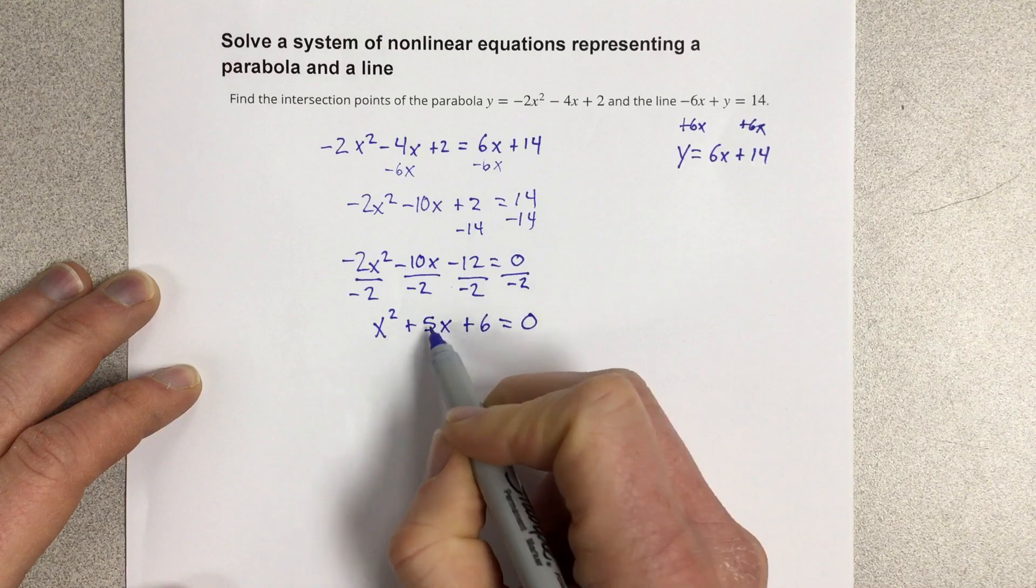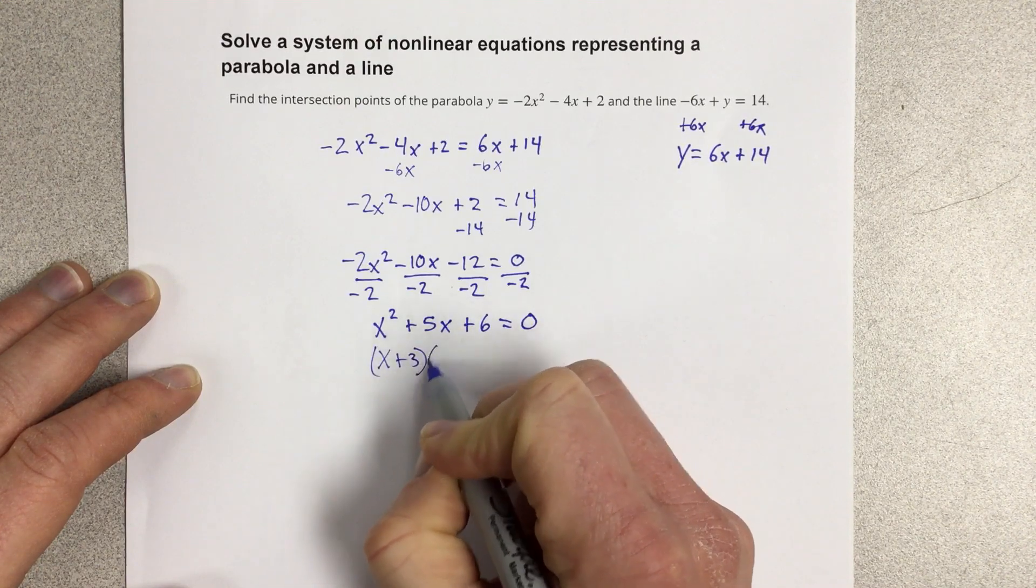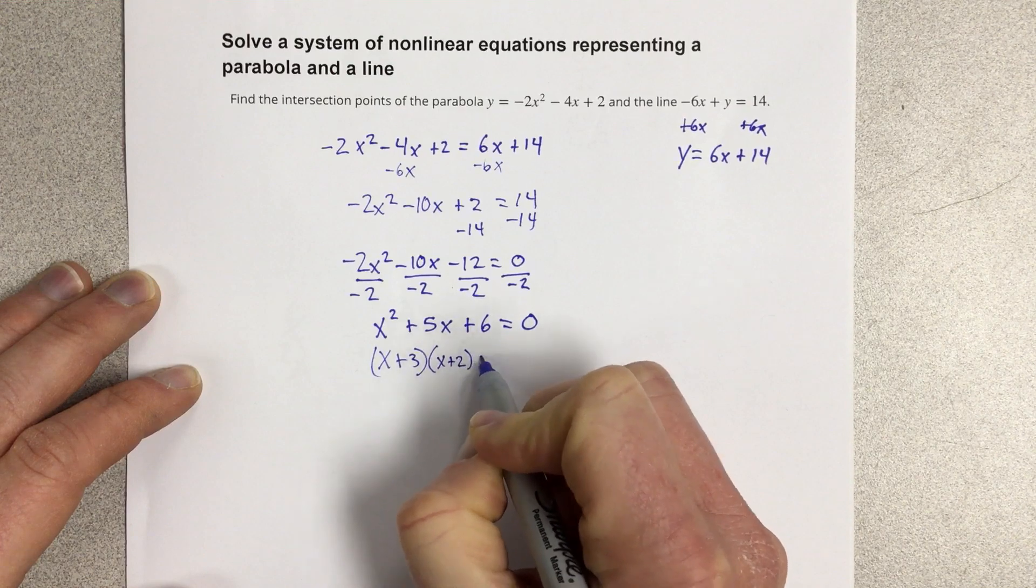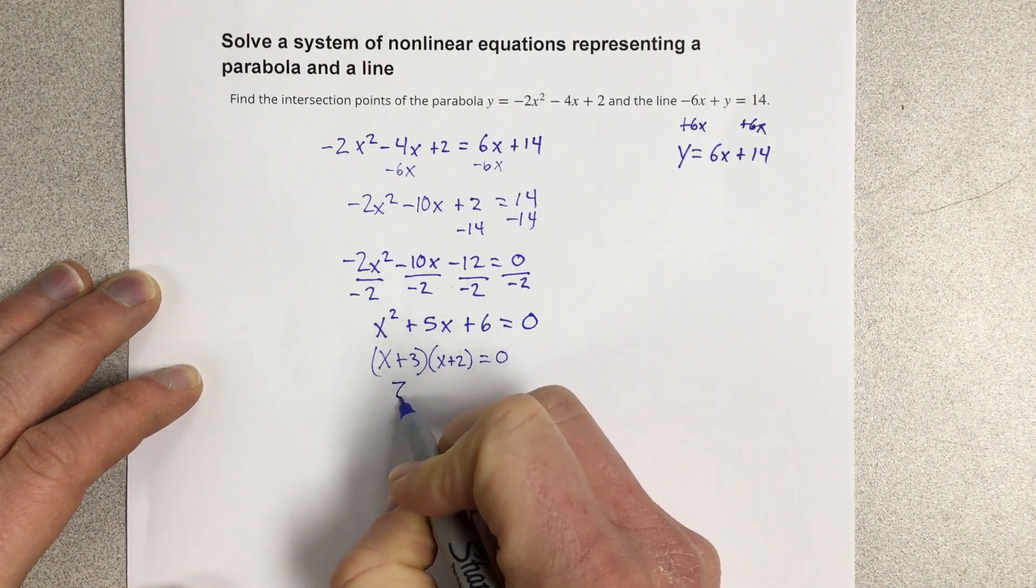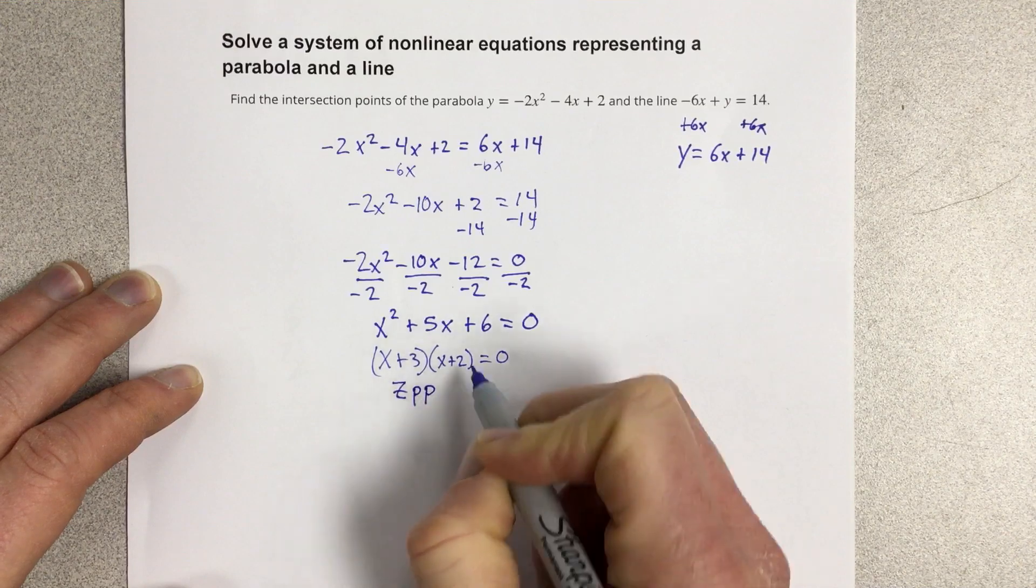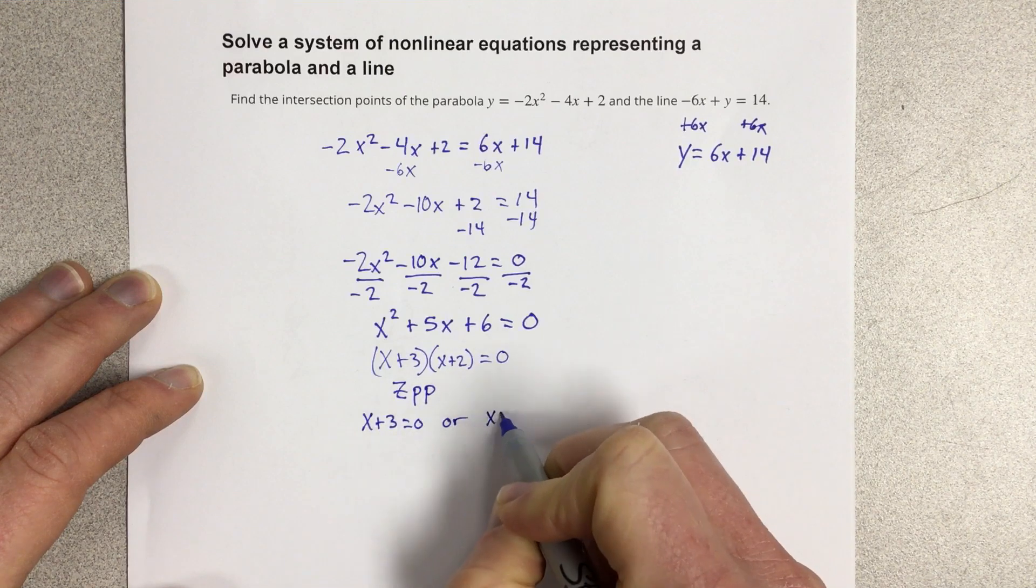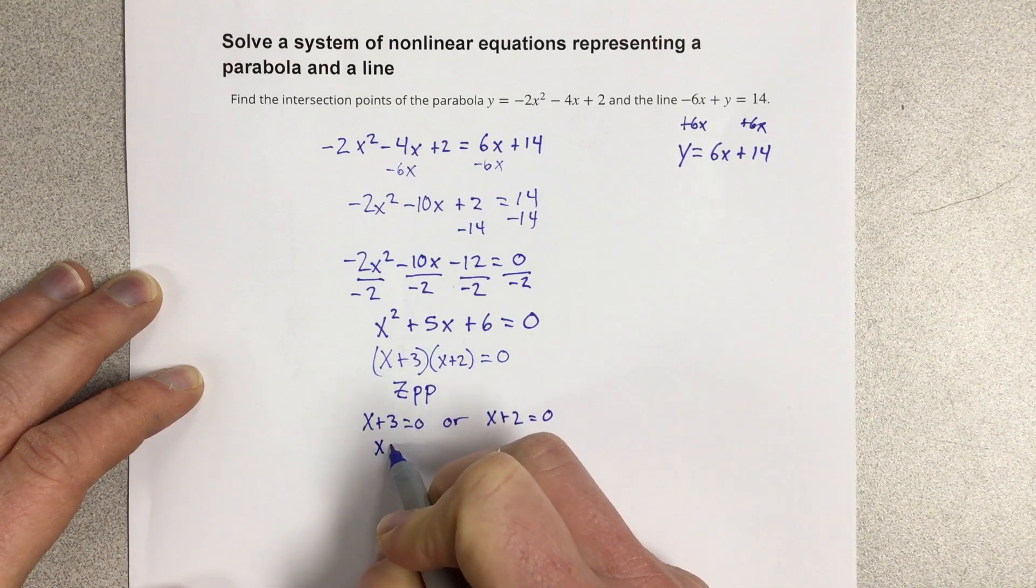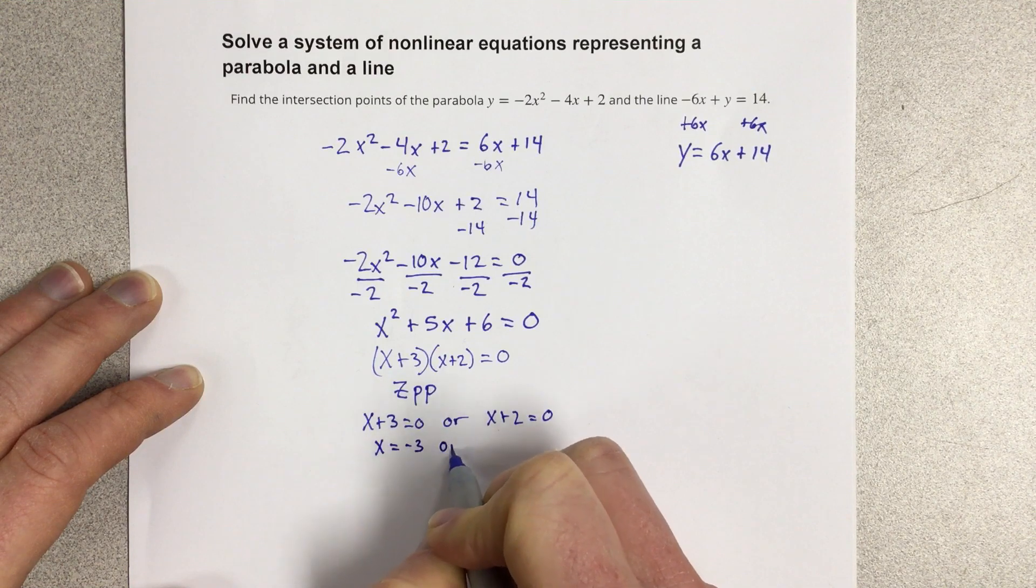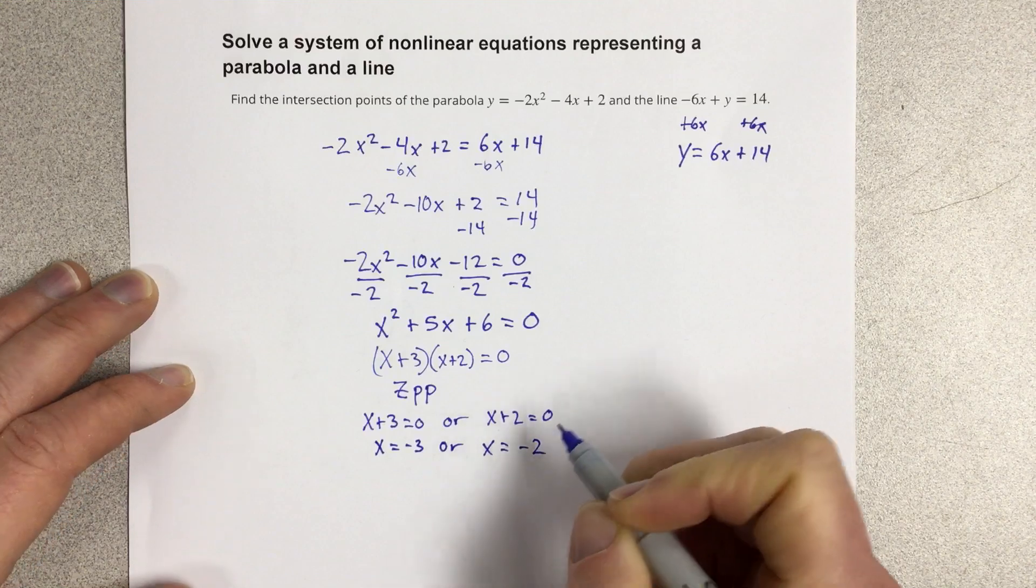So the factors of 6 that add to 5 would be x plus 3, x plus 2 equals 0. We're going to do the zero product property. So that would be x plus 3 equals 0 or x plus 2 equals 0. So we end up with x equals negative 3 or x equals negative 2 for our two x values.